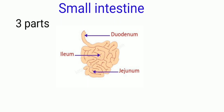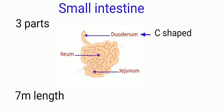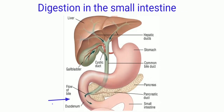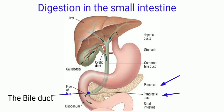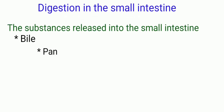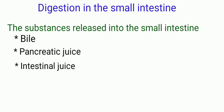The duodenum is a C-shaped part. The length of the small intestine is about 7 meters. The duodenum receives fluids from the gallbladder in the liver and pancreatic juice from the pancreas. The duct of the pancreas and the gallbladder opens into the duodenum via a single pore. The substances released into the small intestine are bile, pancreatic juice, and intestinal juice.